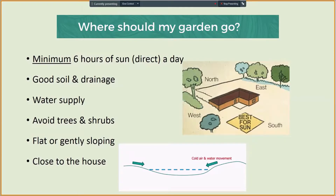You also want to position your garden on flat or gently sloping, well-drained soil. Flat ground offers protection from frost pockets, which are areas of cold air that settle into low spots. Flat ground will also offer protection from water movement. When placing your garden, access to water is key.